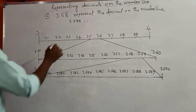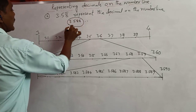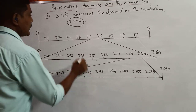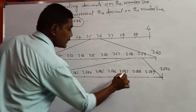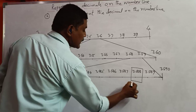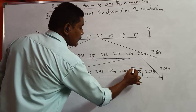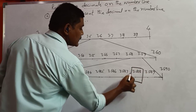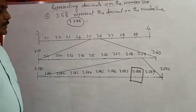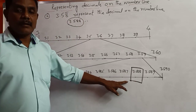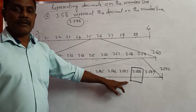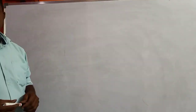So the given decimal 3.588 — where is it? Here it is. This is the required decimal representing this decimal on the number line.